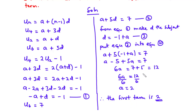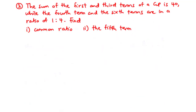Now let's move on to our second question: NOVDEC 2014 question 6b. The sum of the first and third terms of a GP is 40, while the fourth term and the sixth term are in a ratio of 1:4. Find (i) the common ratio, and (ii) the fifth term.